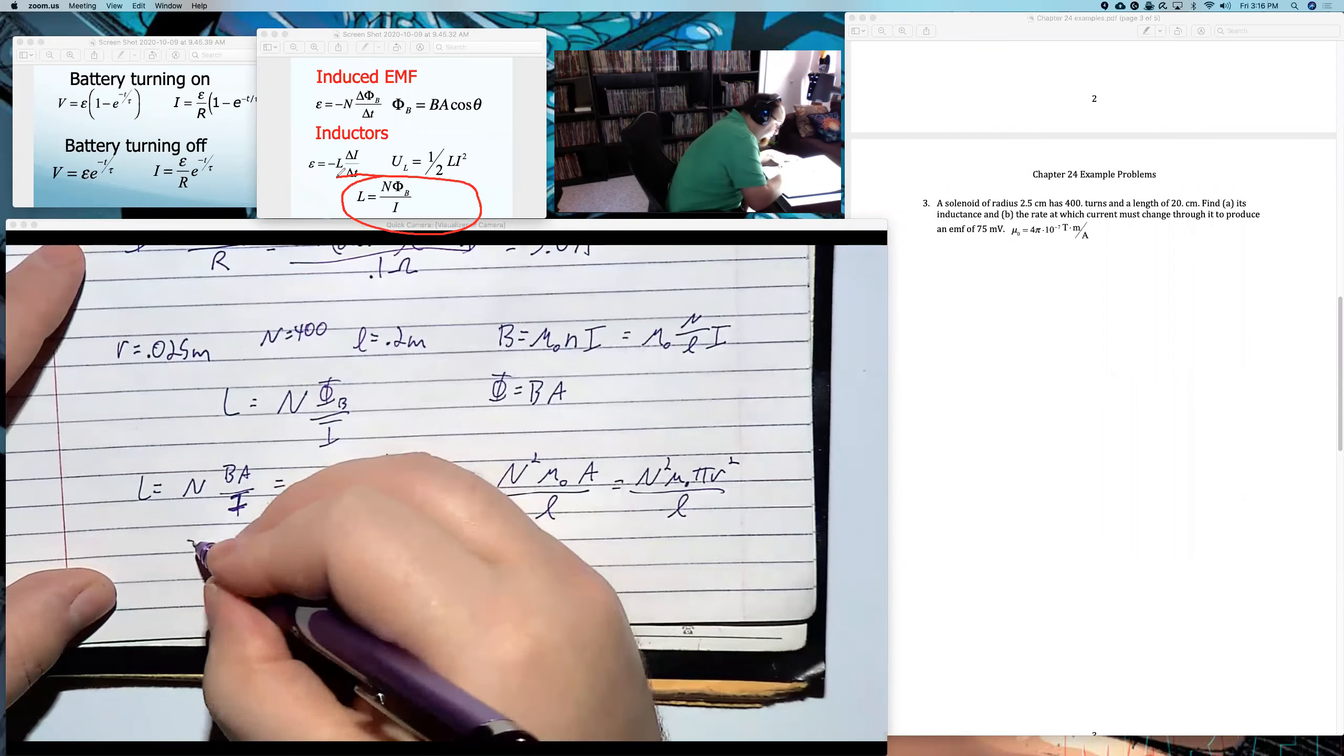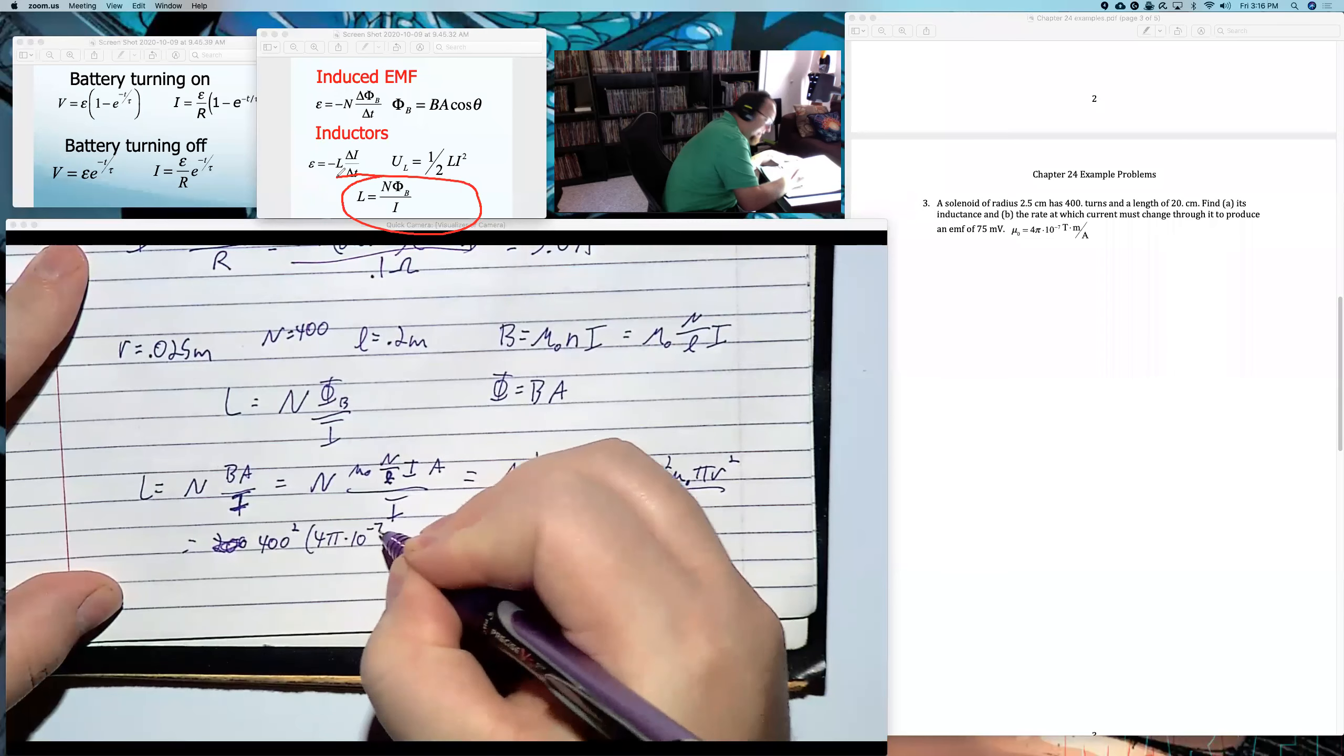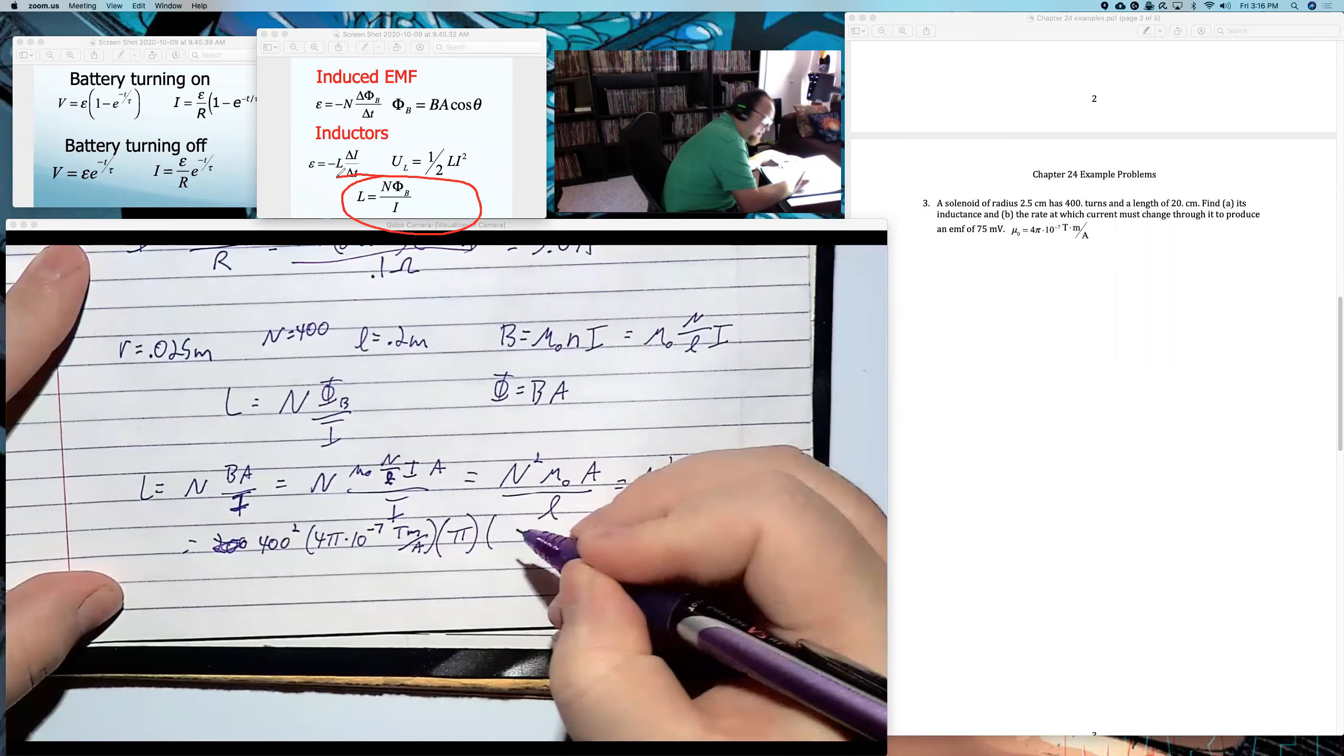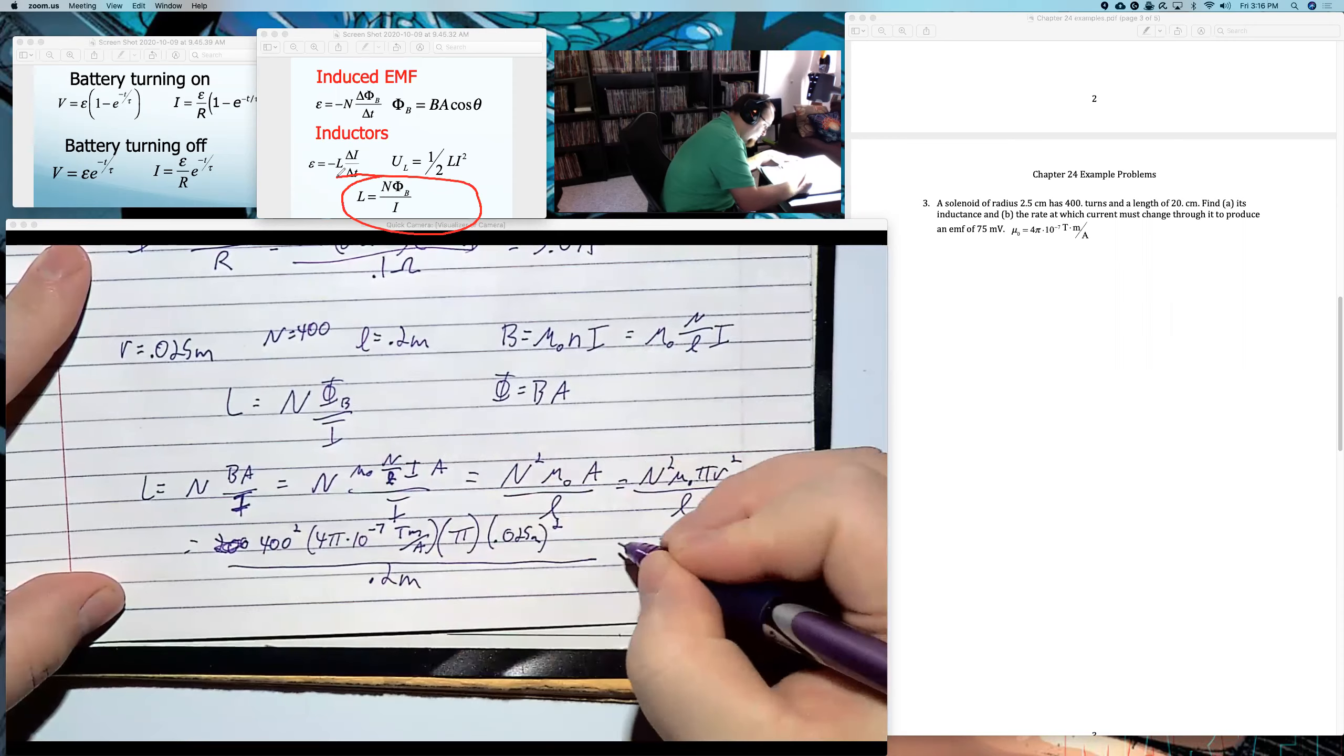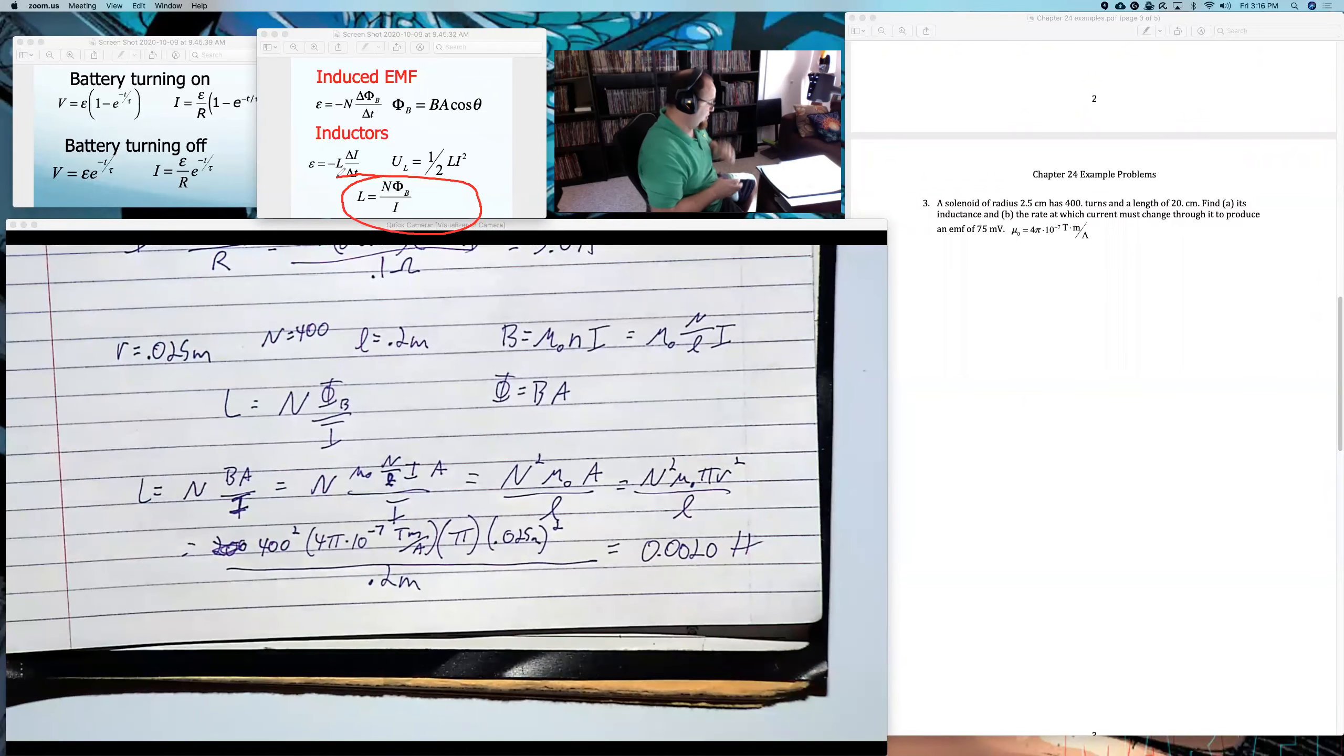Which I'll plug into. 400 turns. 4 pi times 10 to the negative 7, tesla meter per amp. Pi. R squared. And you get 0.002 Henry's or two millihenry's.